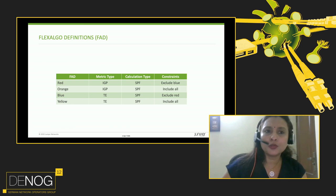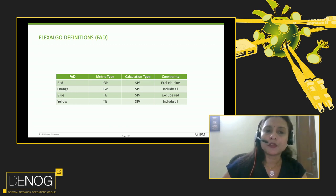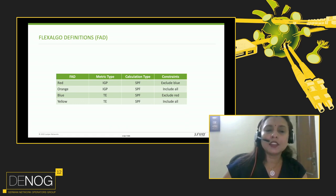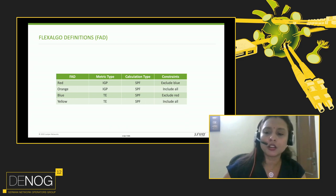We have defined four flex algos: red, orange, blue, and yellow. Red and orange use IGP as the metric type. The red flex algo has a constraint to exclude blue links, whereas the orange flex algo has the constraint to include all links. The blue flex algo has a metric type of TE metric, calculation type of SPF, and a constraint that excludes red links. The yellow flex algo uses TE metric and calculation type SPF, with an include-all constraint.